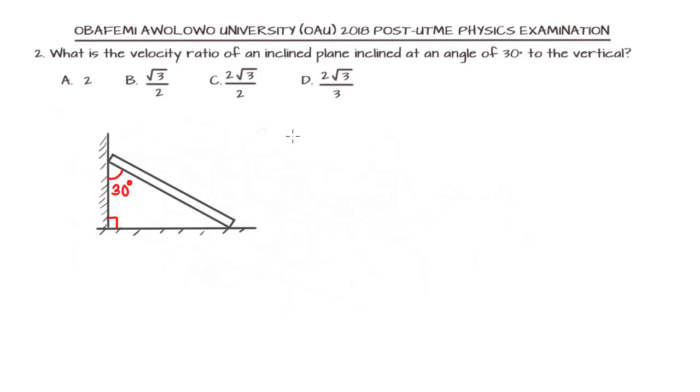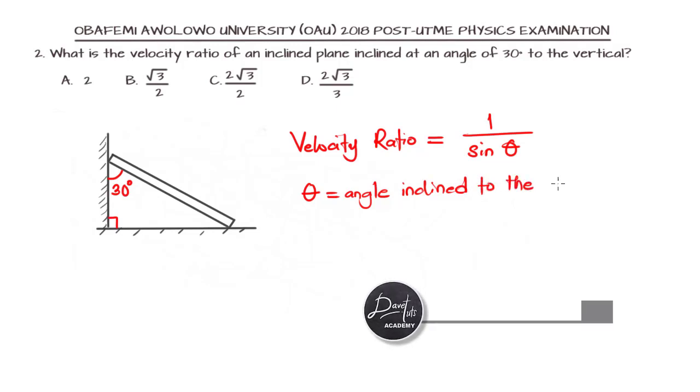What is the formula for the velocity ratio? The velocity ratio is given as 1 over sin theta. But what is theta? Theta is the angle inclined to the horizontal, not the angle inclined to the vertical.